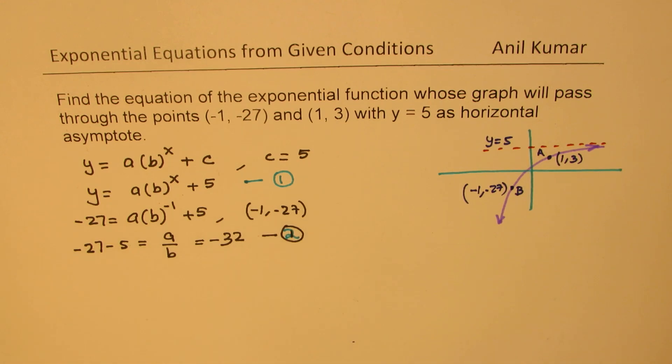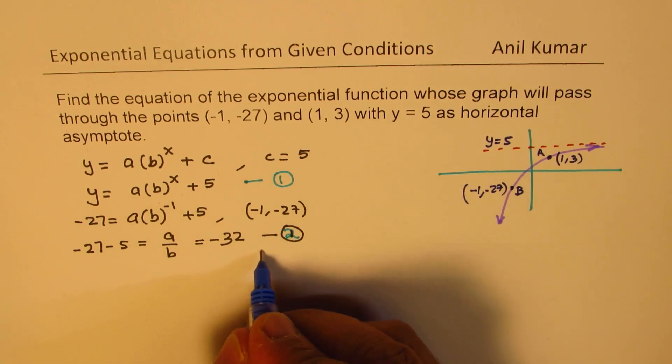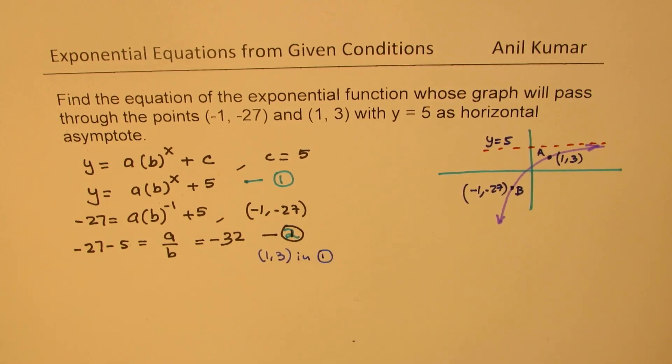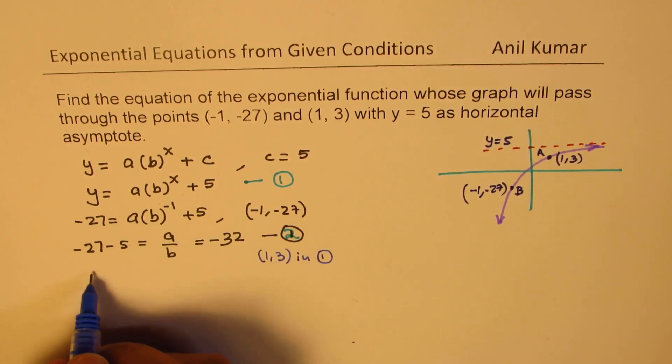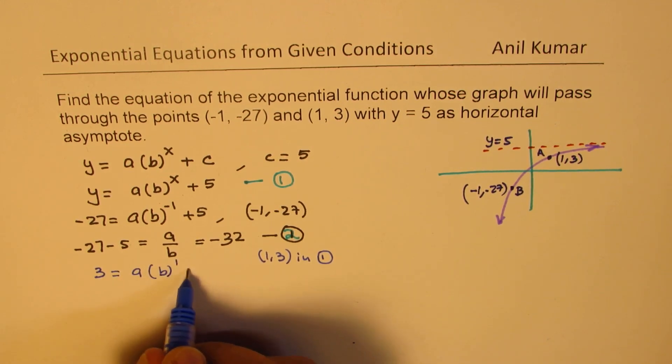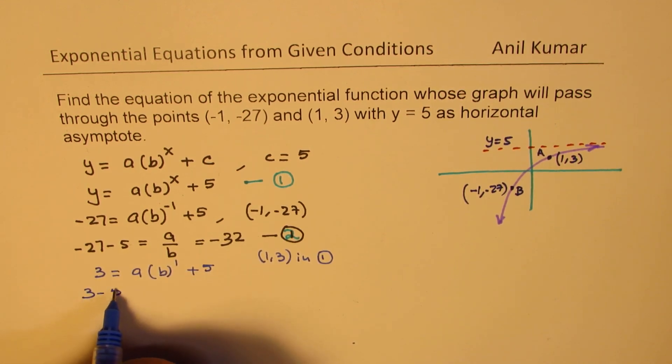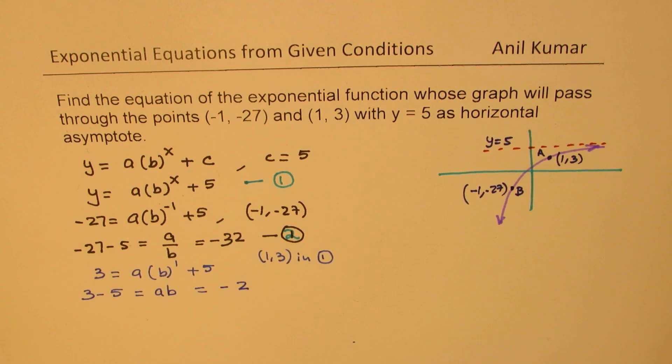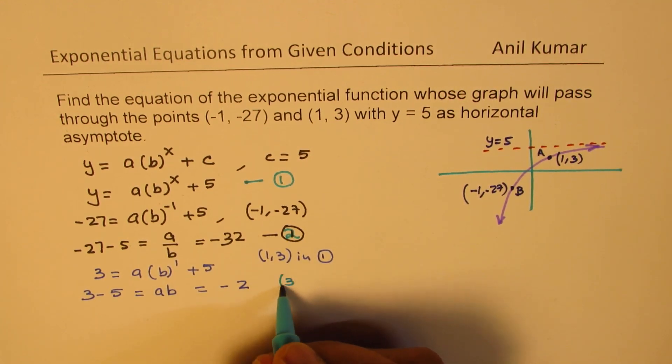When I substitute the point (1, 3) in equation 1, we get 3 = a(b)^1 + 5. Taking 5 to this side, we get 3 - 5 = ab. So ab = 3 - 5, which is -2. Let's call this our equation number 3.